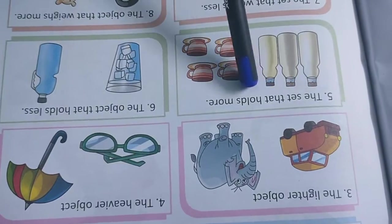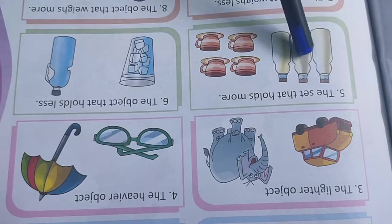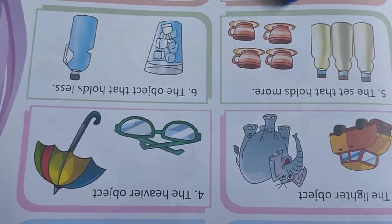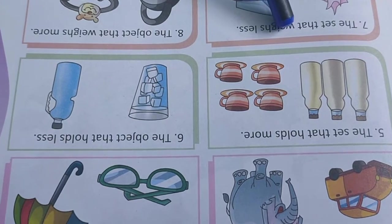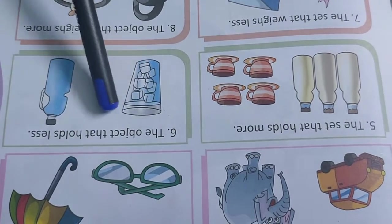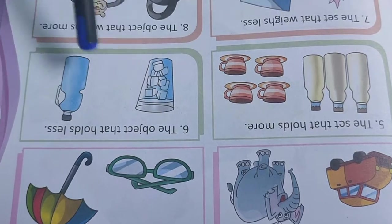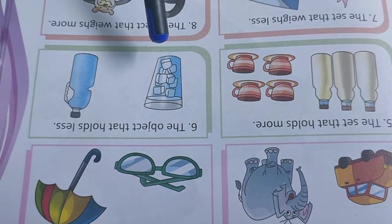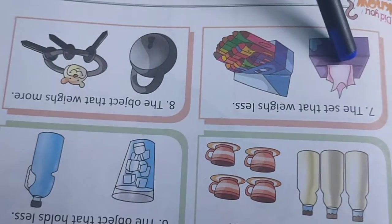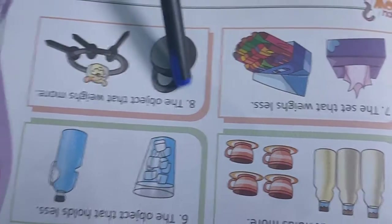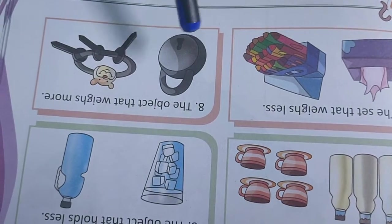The shade that holds more. Here 3 bottles, here 4 cups. Number 5, bottles can hold more. The object that holds less, which one? That one? Glass, less. Then the shade that weighs less, this one, tissues. Then the object that weighs more, lock.